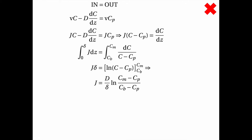So J·C minus D·(dC/dz) equals J·C_p. We can move J to one side and the derivative to the other side, then integrate. We integrate over the thickness of the region where the concentration gradient exists — from the bulk to close to the membrane surface — and integrate the concentration from the bulk concentration to the membrane surface concentration, giving us the resulting equation.